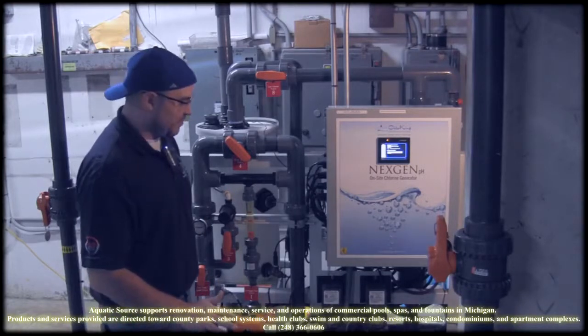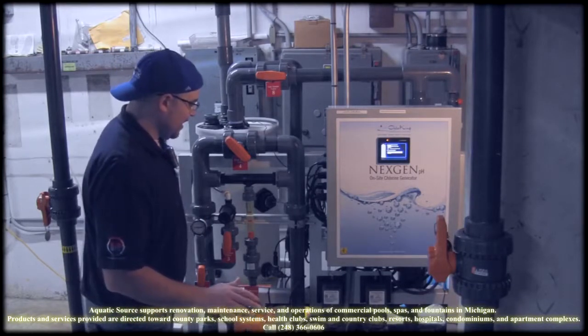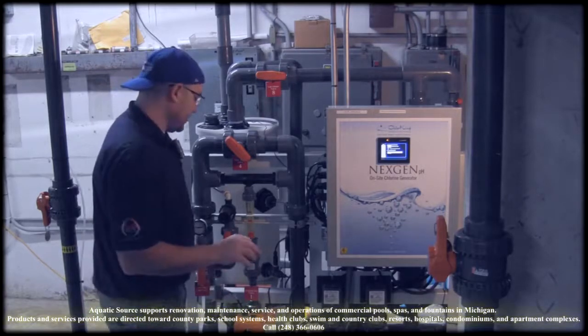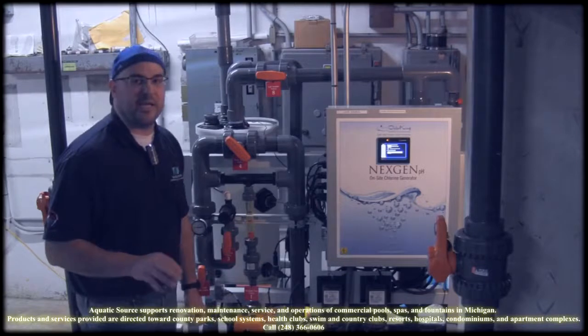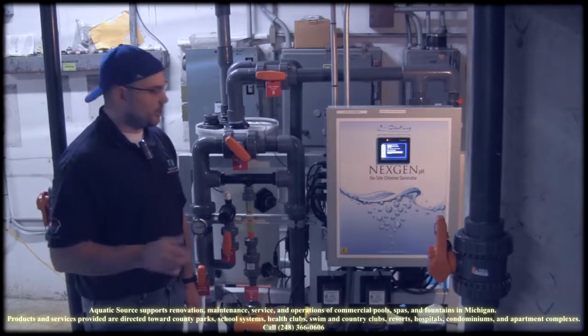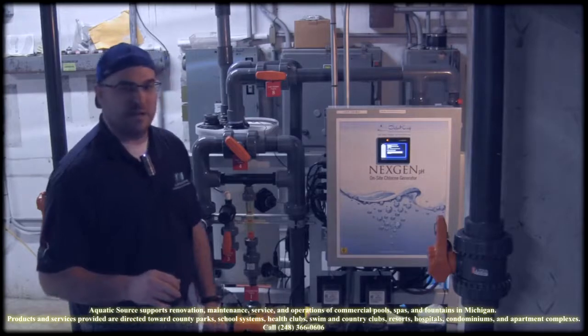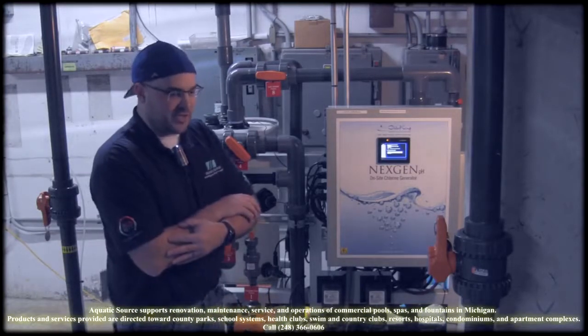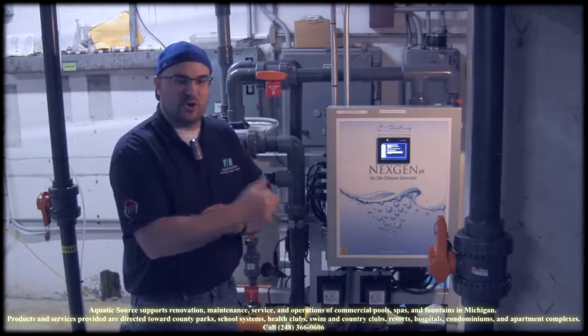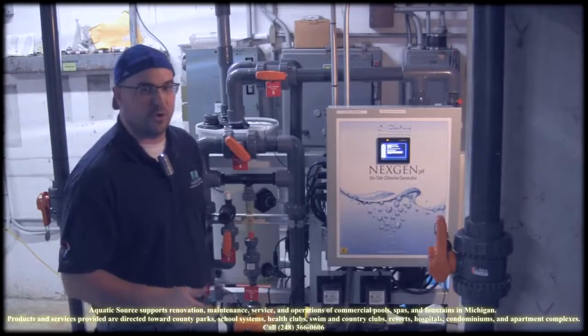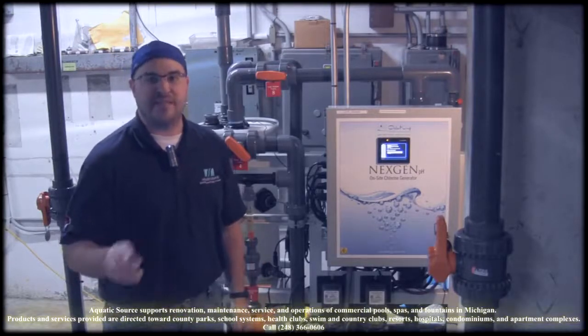One of the other neat things about the machine that I think is something that doesn't get talked about enough is the fact that it's producing chlorine that's far different from the chlorine that you're using traditionally. Traditional chlorine is about 12% in strength. When you get out of a 12% pool, you feel dry, you feel crusty, you feel like you need that shower. This machine is actually making a chlorine that's far less aggressive than that type of chlorine.